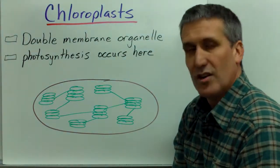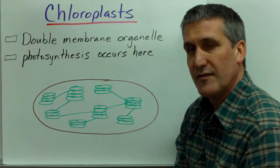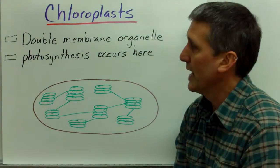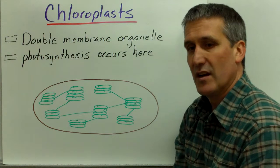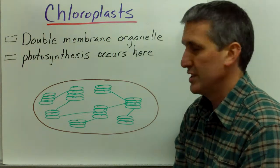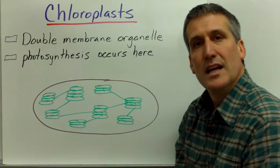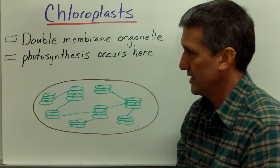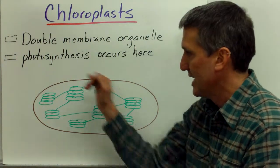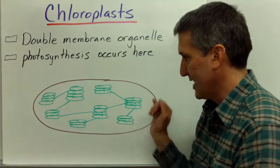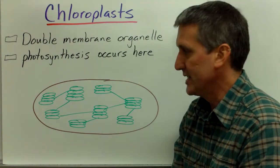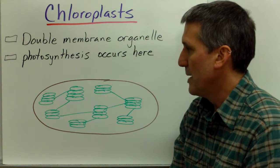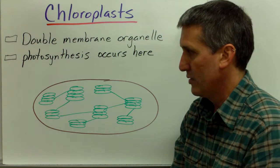Chloroplasts are next. These are organelles found in plant cells. They are specialized double membrane organelles and are the site of photosynthesis. We're going to have another lecture specifically focused on the process of photosynthesis and the structure of a chloroplast. As you can see, it's a very specialized structure for a very specialized set of metabolic reactions.